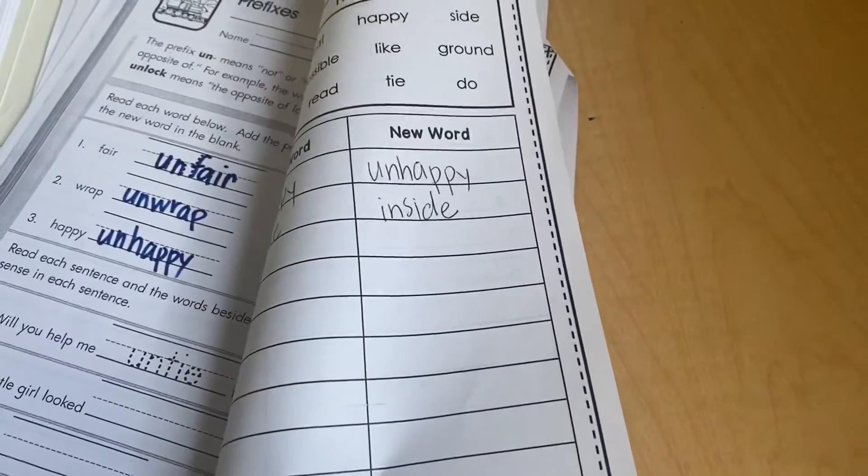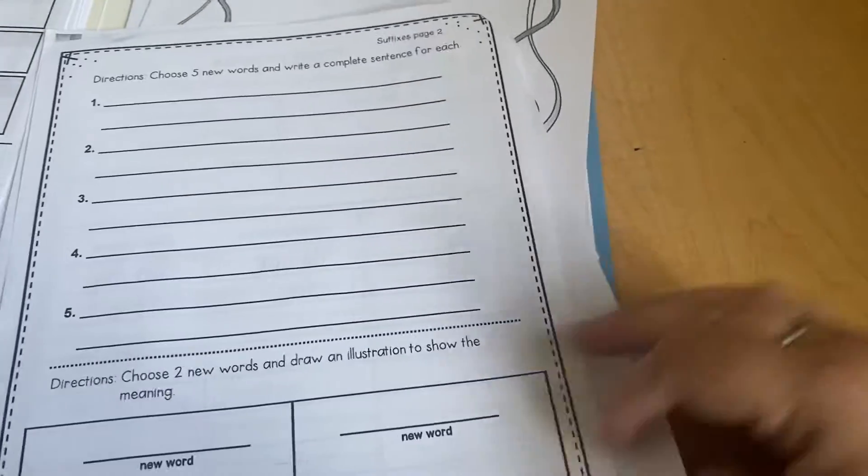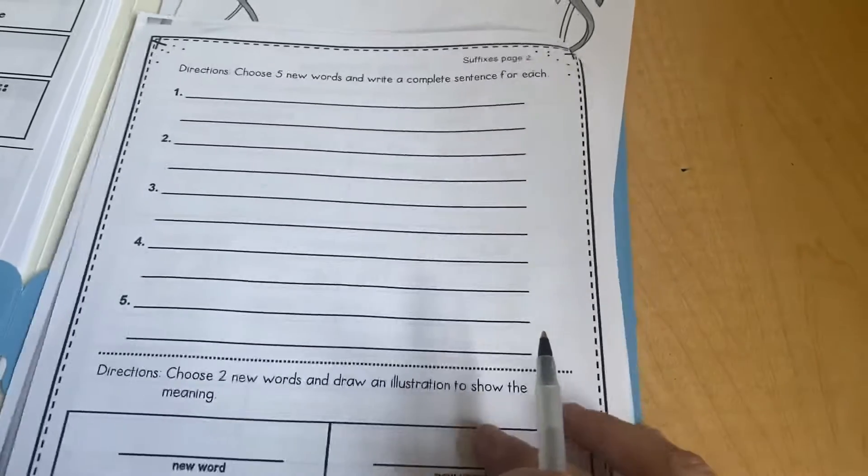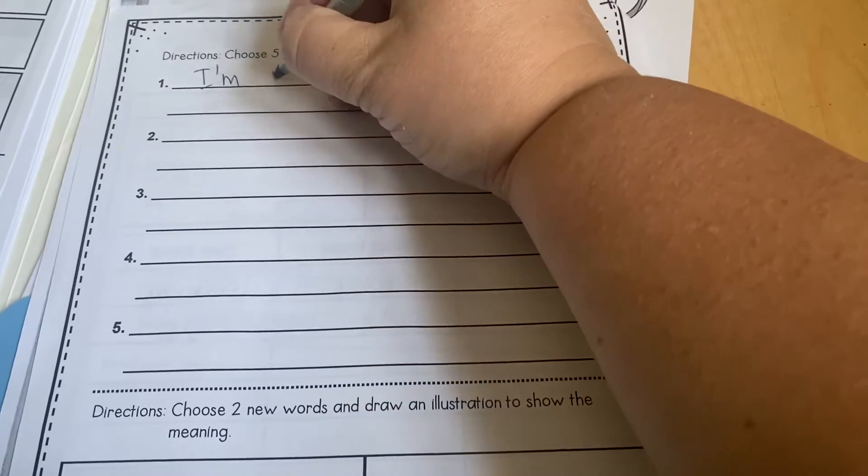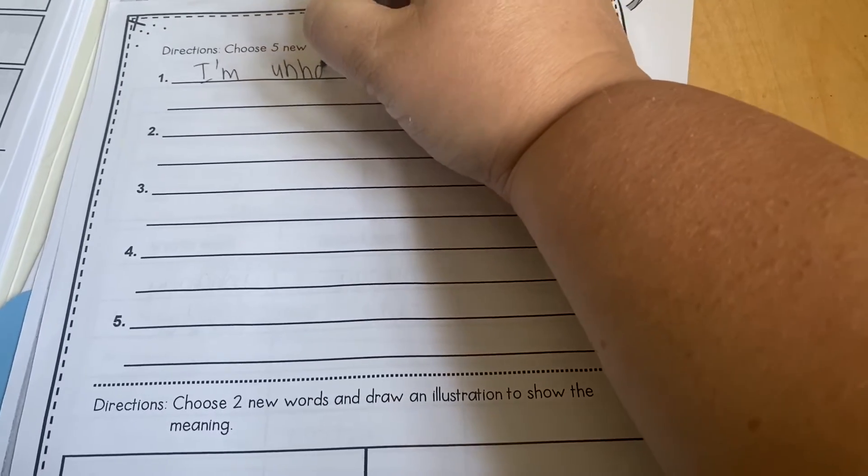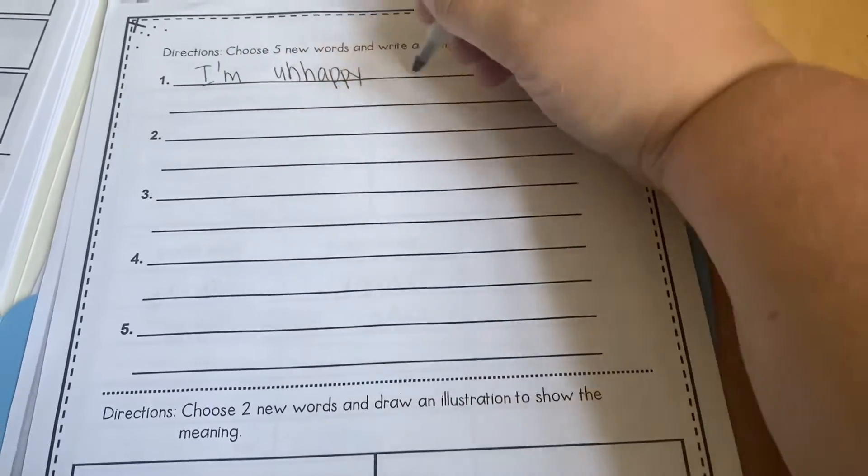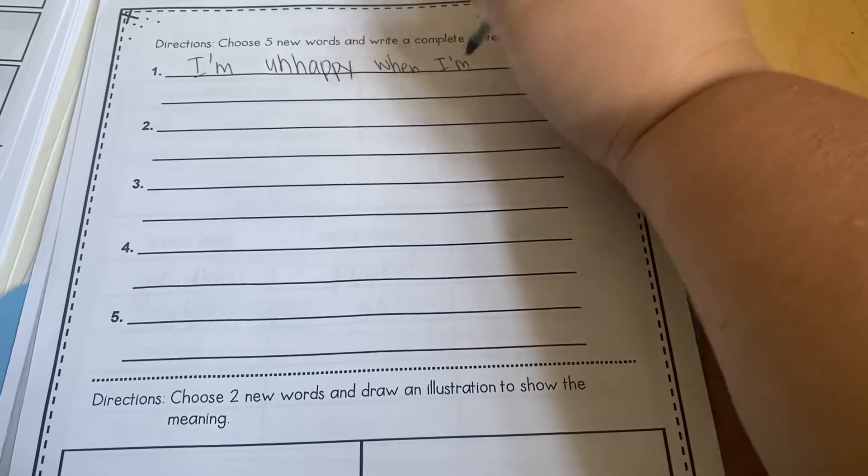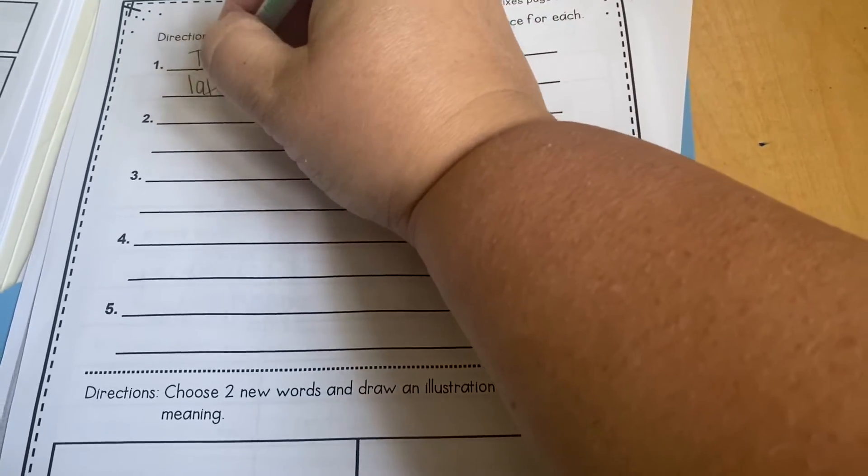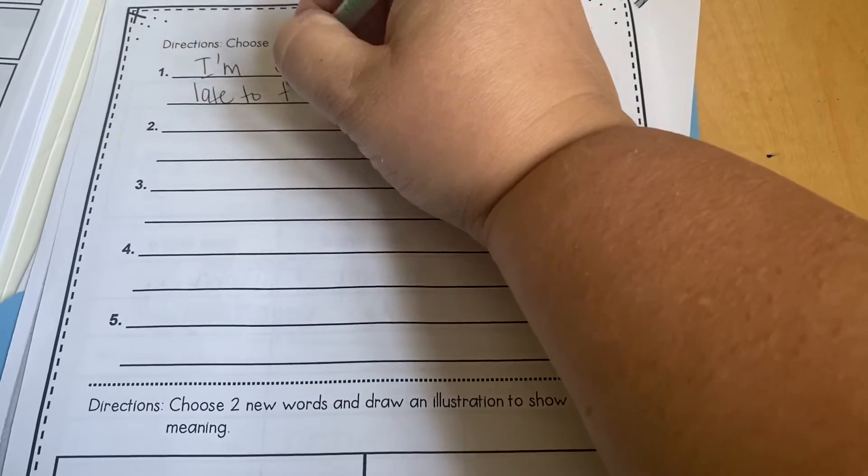So you're going to choose one of your new words that you made yesterday. So I did unhappy and inside, and then you're going to write a sentence. I'm unhappy when I'm late to things. I like being on time.